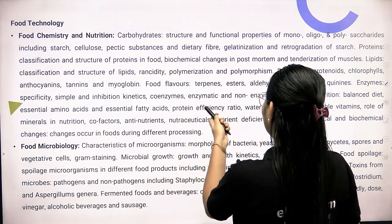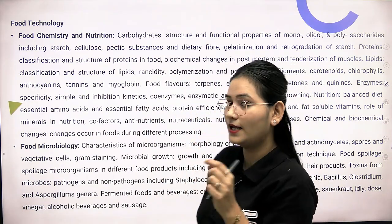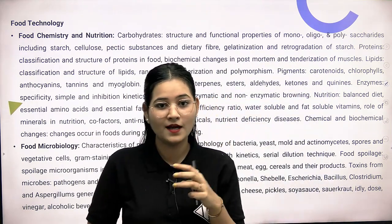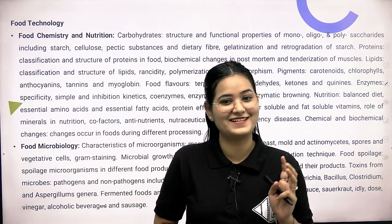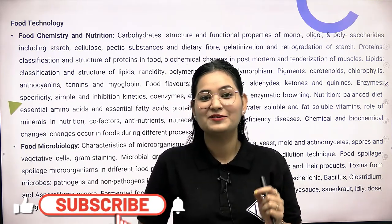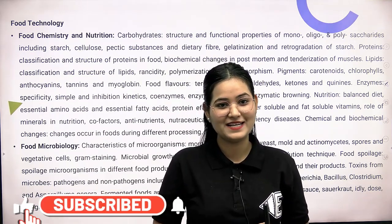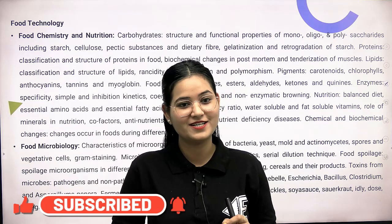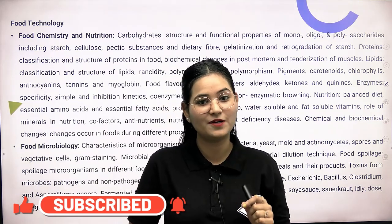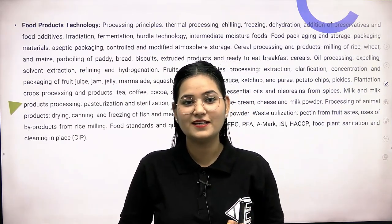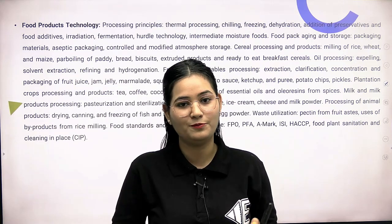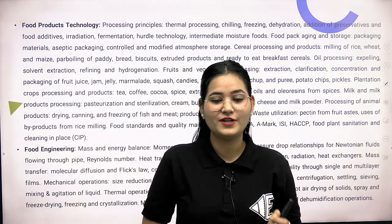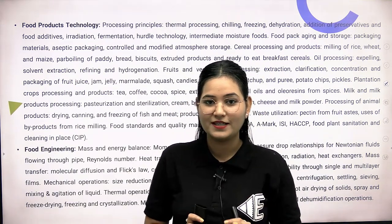Basically, two to three sections are combined into one section here. The first section is food chemistry and nutrition, and the second is food microbiology technology. The third section is food product technology, and the fourth is food engineering. So in total there are four sections.